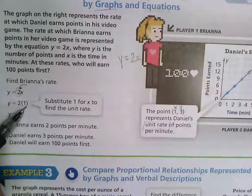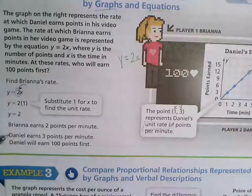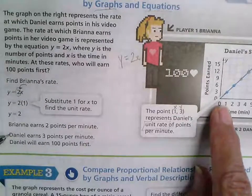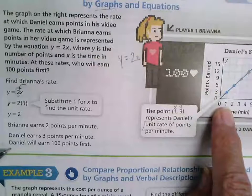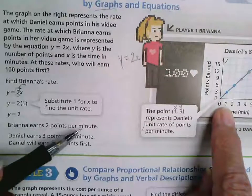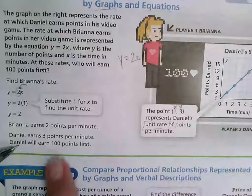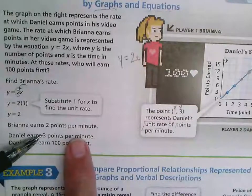So we know by looking at the graph that Daniel earns three points in one minute, and Brianna earns two points in every minute. So Daniel will get to 100 first because he's getting more points per minute.